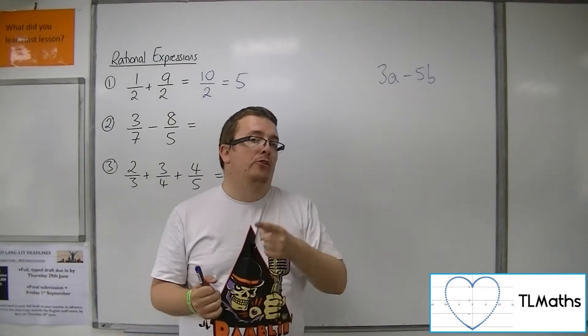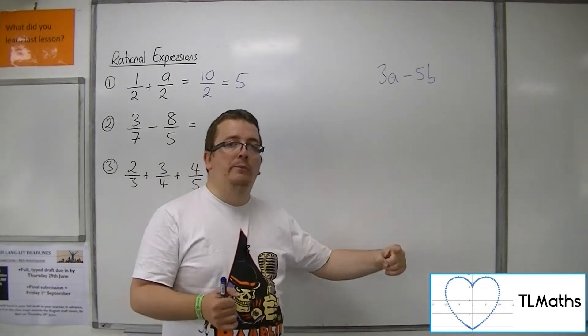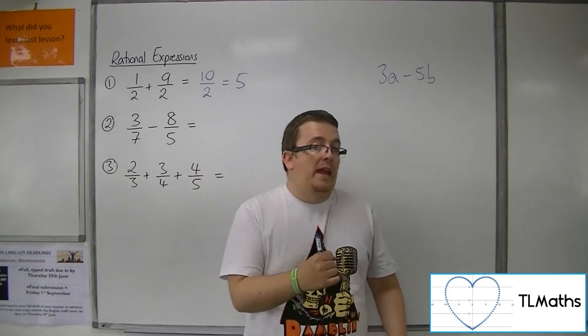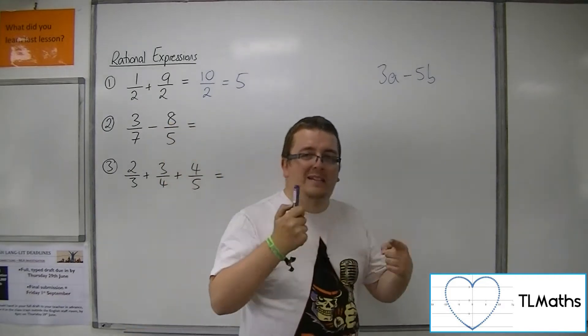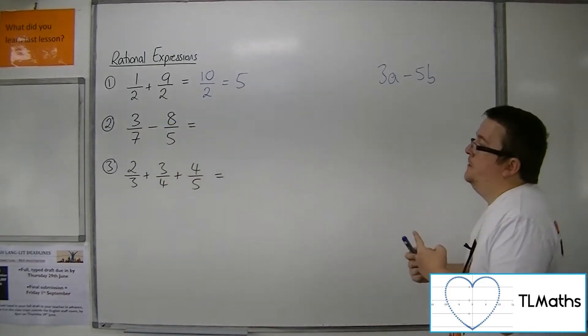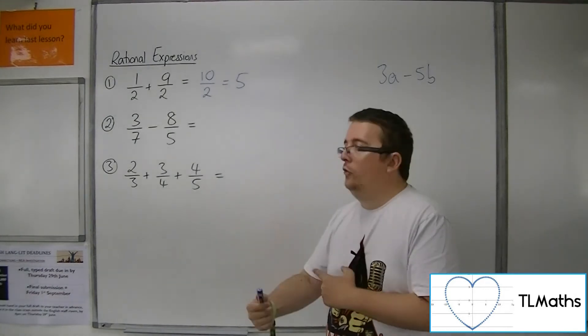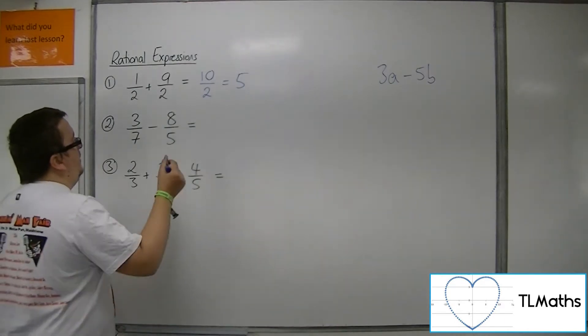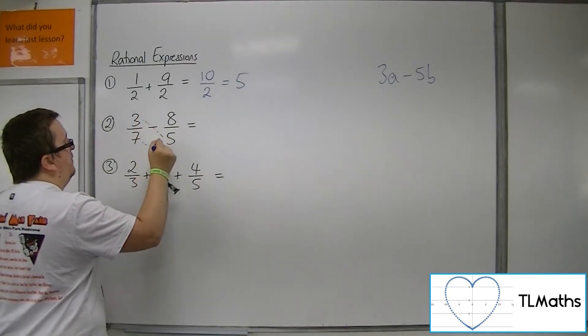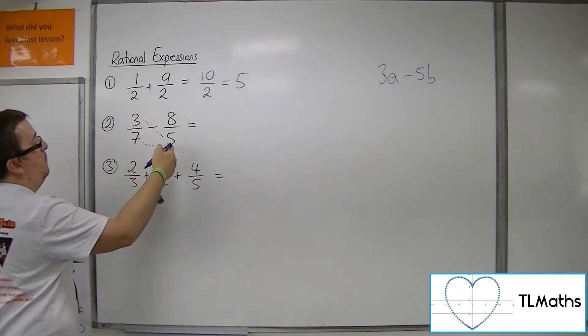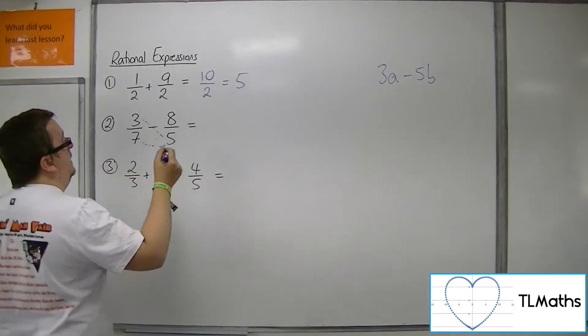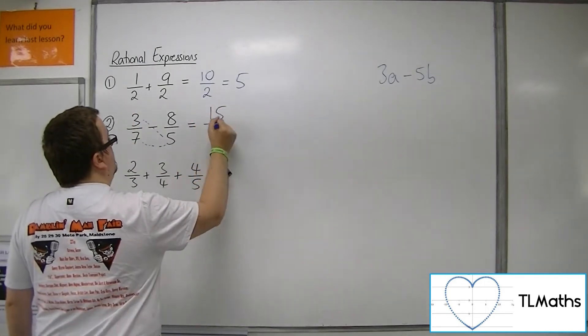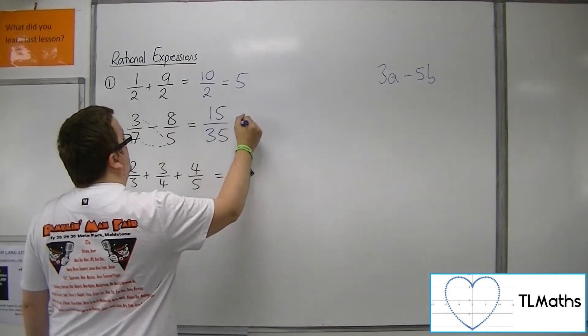But if I was able to write A in terms of B or B in terms of A, then I would be able to combine them. And that's effectively what's going on here. So we go through this process of using cross multiplication, which does the job for us. What we do is we multiply top and bottom of this first fraction by the 5, by the denominator of the second. So it doesn't change the size of the fraction.